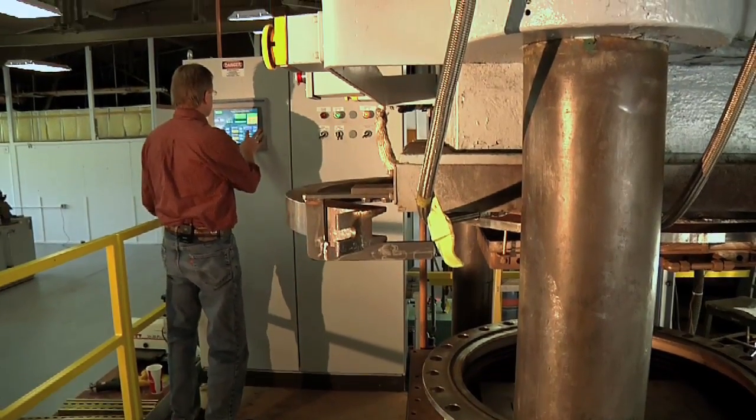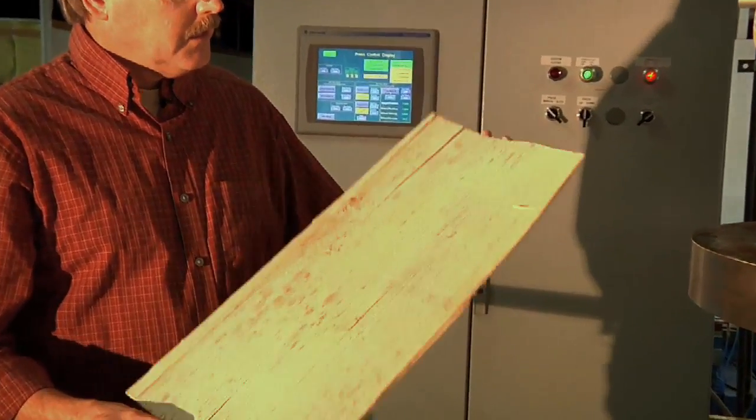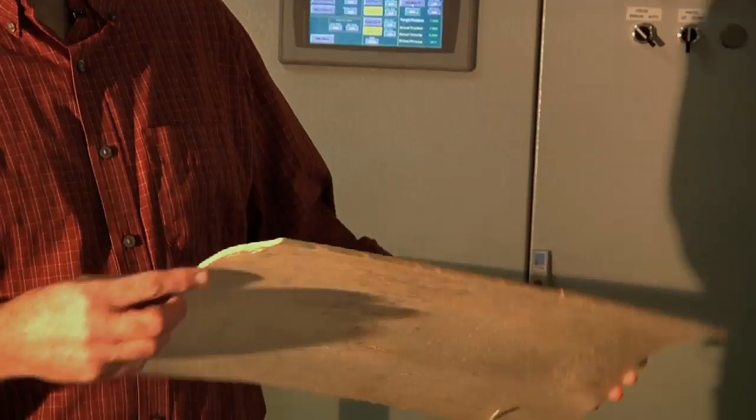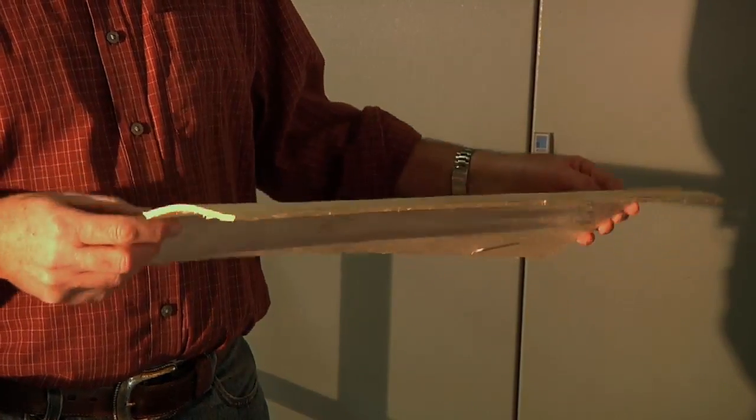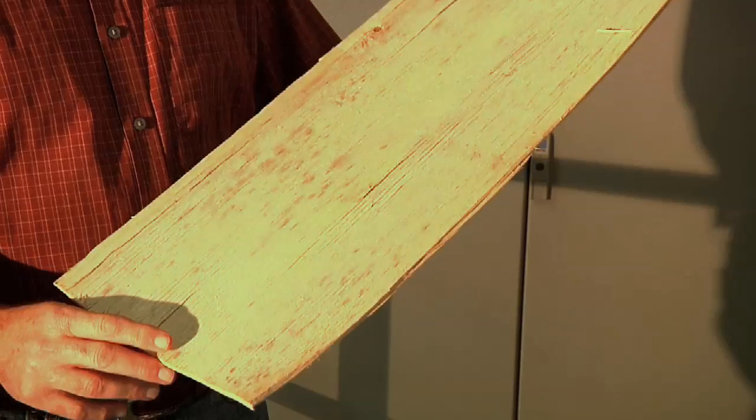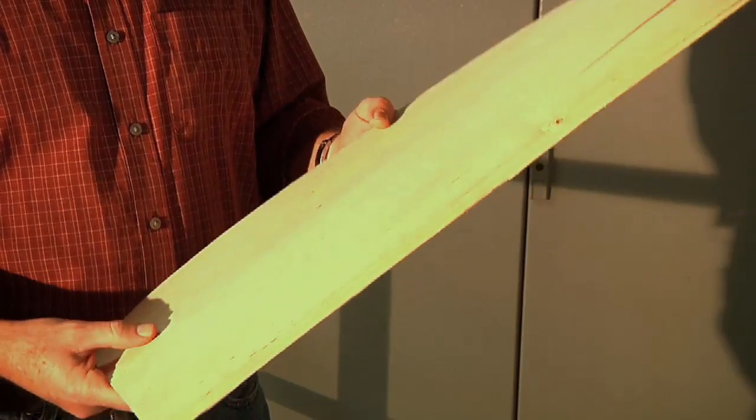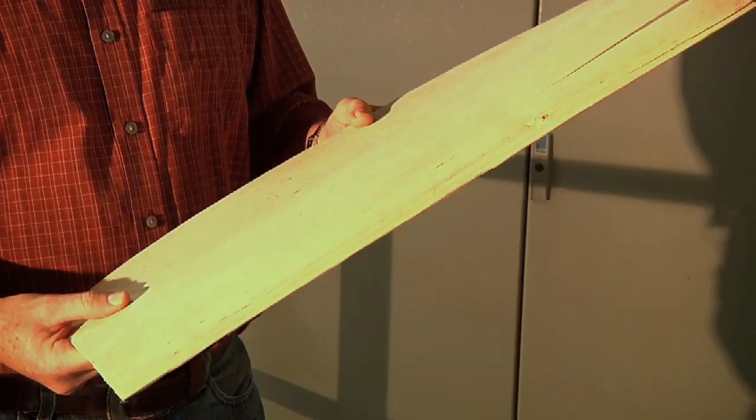One of the wood species that we like to use is this hybrid poplar, and this is a piece of rotary peeled hybrid poplar. It's a bit more than one-eighth of an inch thick. This material has a low density, it doesn't have very high strength or stiffness, it's not suitable for structural grades of laminated veneer lumber or for high-strength plywood.